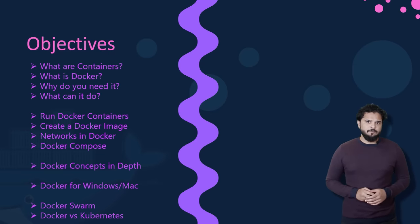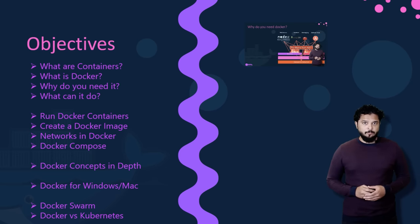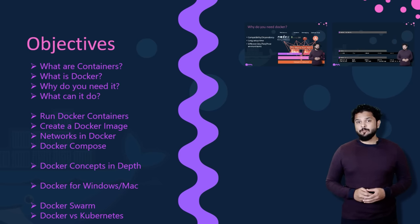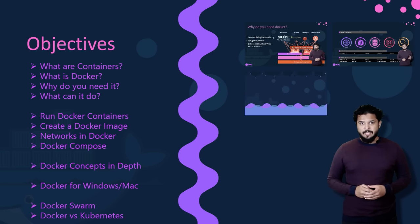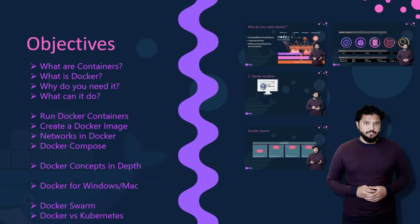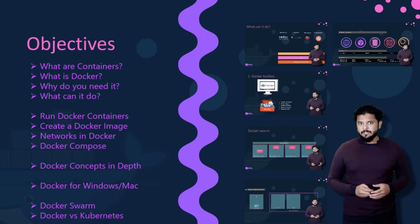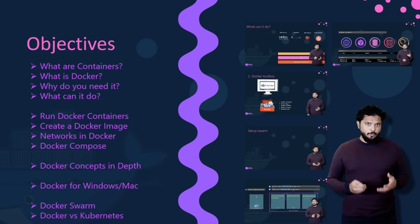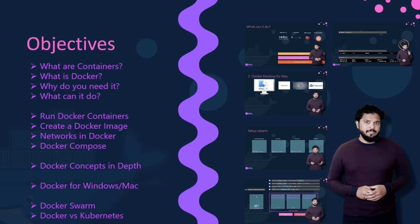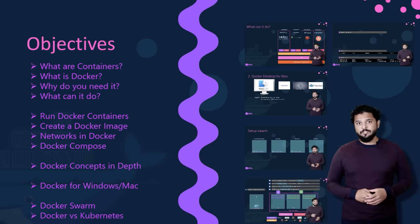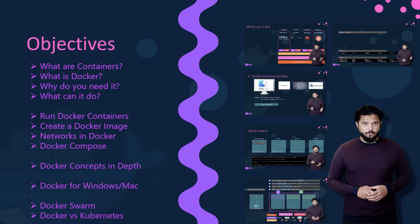Let's look at the objectives of this course. We first try to understand what containers are, what Docker is, and why you might need it and what it can do for you. We will see how to run a Docker container, how to build your own Docker image, networking in Docker, and how to use Docker Compose, what Docker registry is, how to deploy your own private registry, and we look at some concepts in depth, understanding how Docker really works under the hood. We look at Docker for Windows and Mac before finally getting a basic introduction to container orchestration tools like Docker Swarm and Kubernetes.